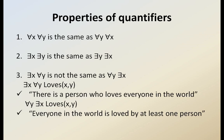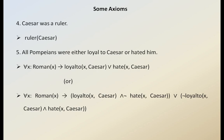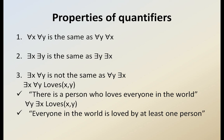These are some axioms. Now we look at the properties of quantifiers. For all X, for all Y equals for all Y, for all X — they are interchangeable. Similarly, there exists X, there exists Y equals there exists Y, there exists X. However, there exists X, for all Y is NOT the same as for all Y, there exists X — whenever you use two different kinds of quantifiers, reversing their order changes the meaning.